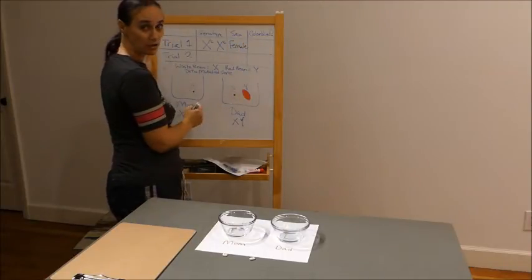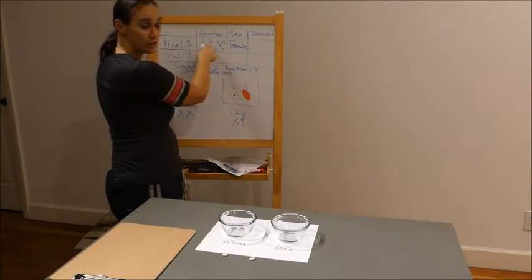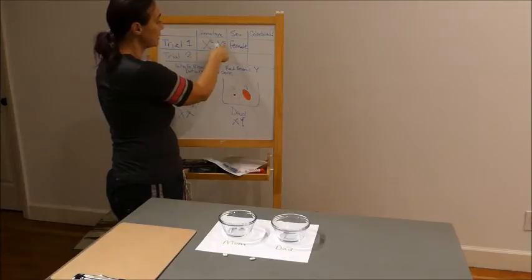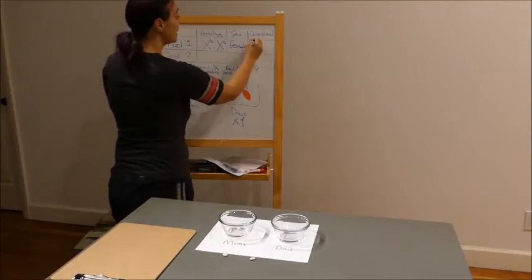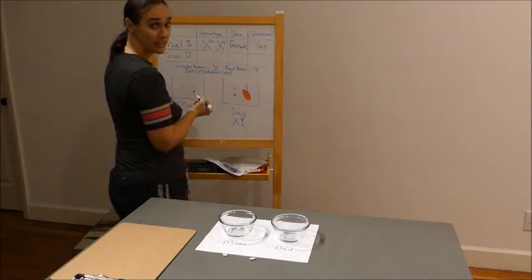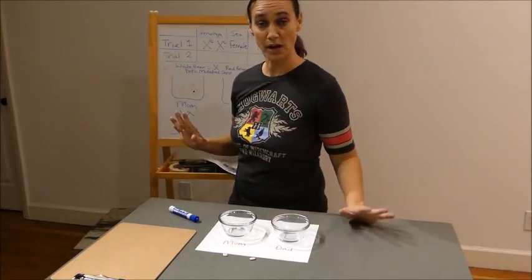Is she colorblind? Well, let's see. She has a recessive gene linked to this X chromosome and a recessive gene linked to this X chromosome. She is homozygous recessive. So yes, indeed, she is colorblind. Okay. Now that's all you do for trial one.